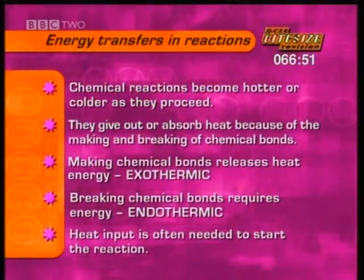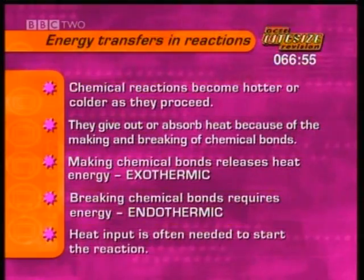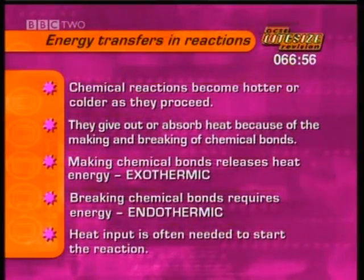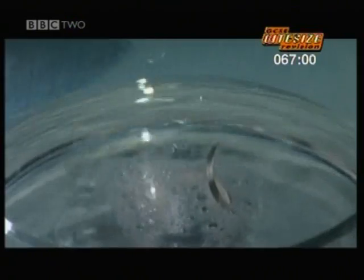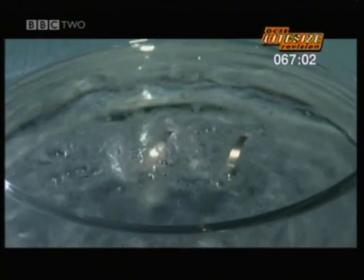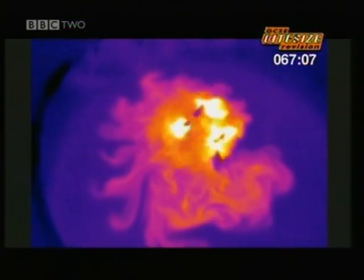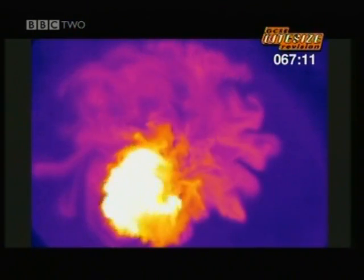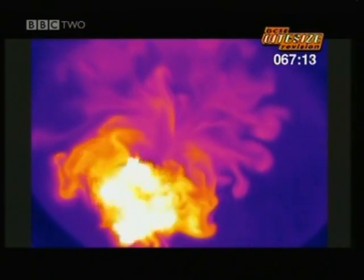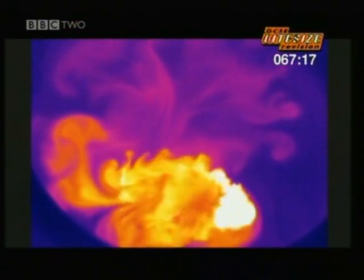Watch this clip and think about the different energy changes taking place in exothermic reactions. This is a strip of magnesium metal. Drop it into hydrochloric acid and watch using a heat-sensitive camera. Blue is cold, purple is warm, yellow is hot, white is even hotter. Clearly the reaction releases heat — it's exothermic.